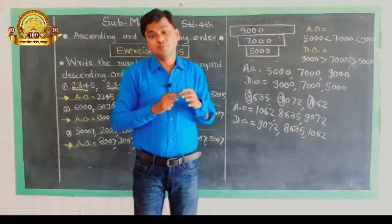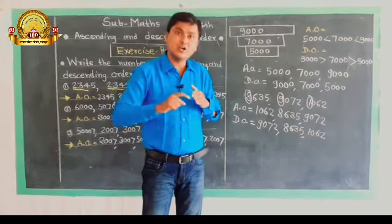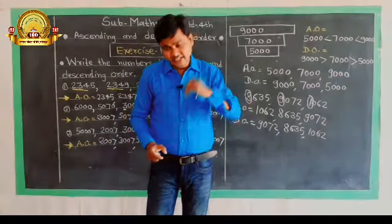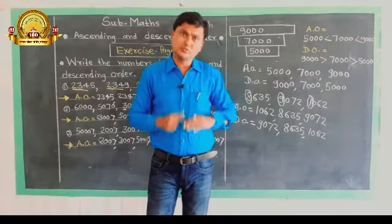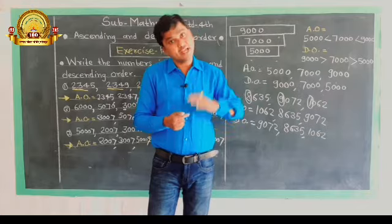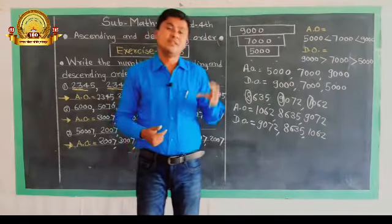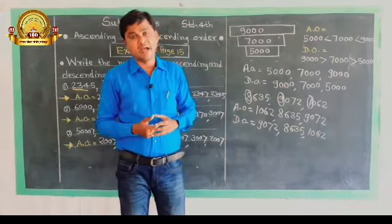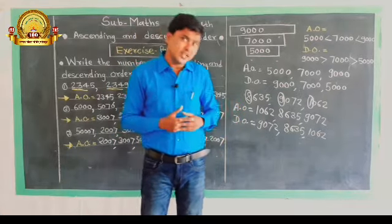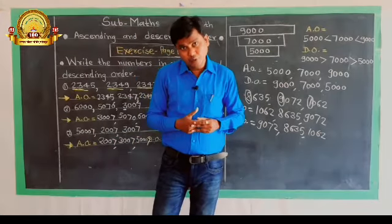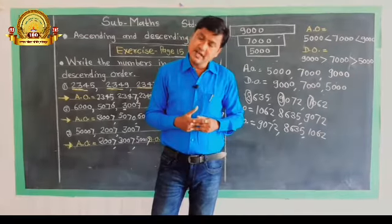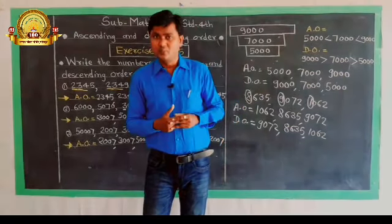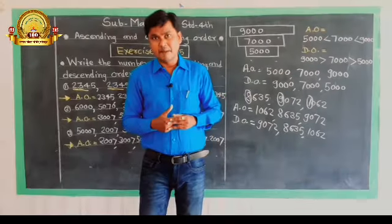In ascending order you arrange numbers from smaller to bigger, and in descending order you arrange from bigger to smaller. Go to our video and like this, and don't forget to subscribe to the channel. Bye bye, take care.